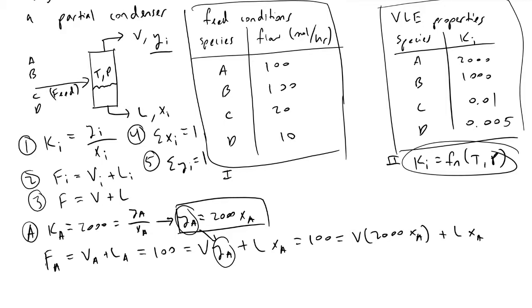Next, we use our total mole balance equation: F = V + L. If we sum up the total moles from this column, we get 230 mole per hour. Therefore, V equals 230 minus L.